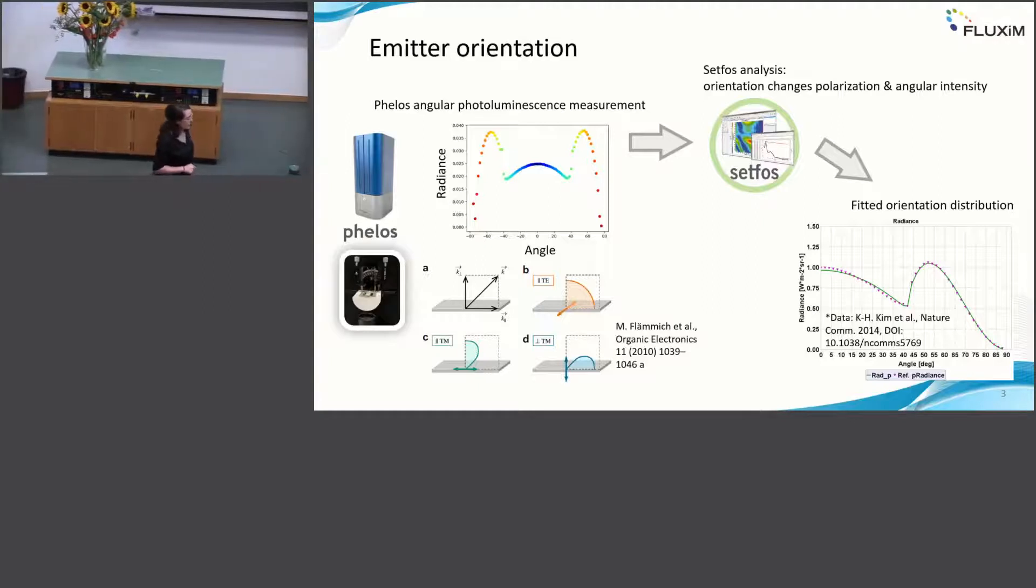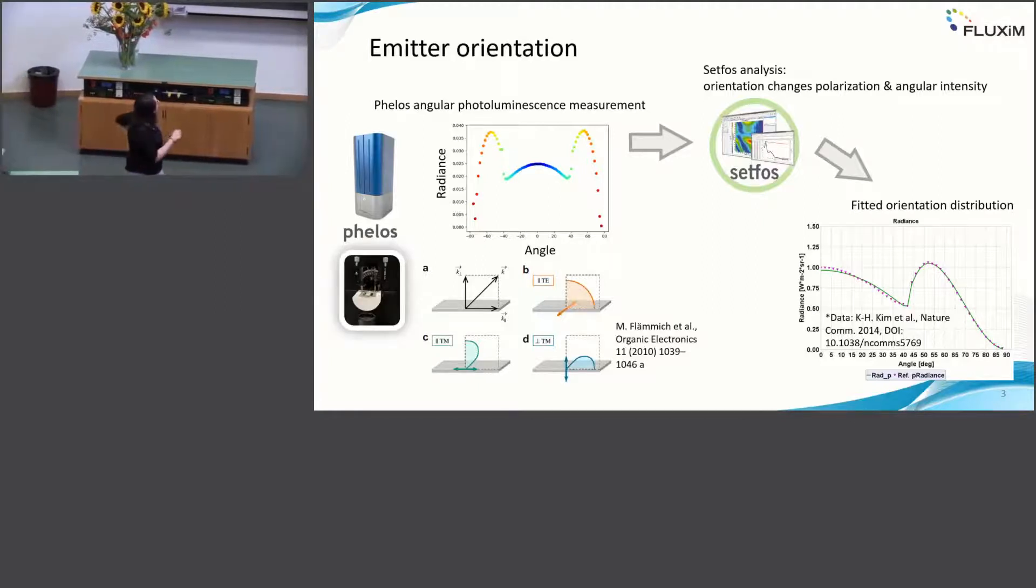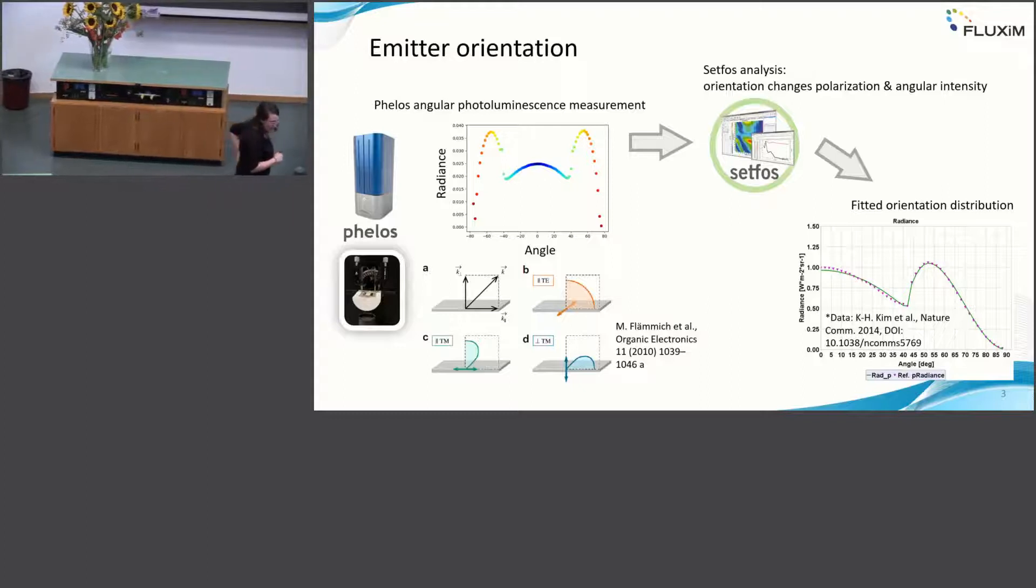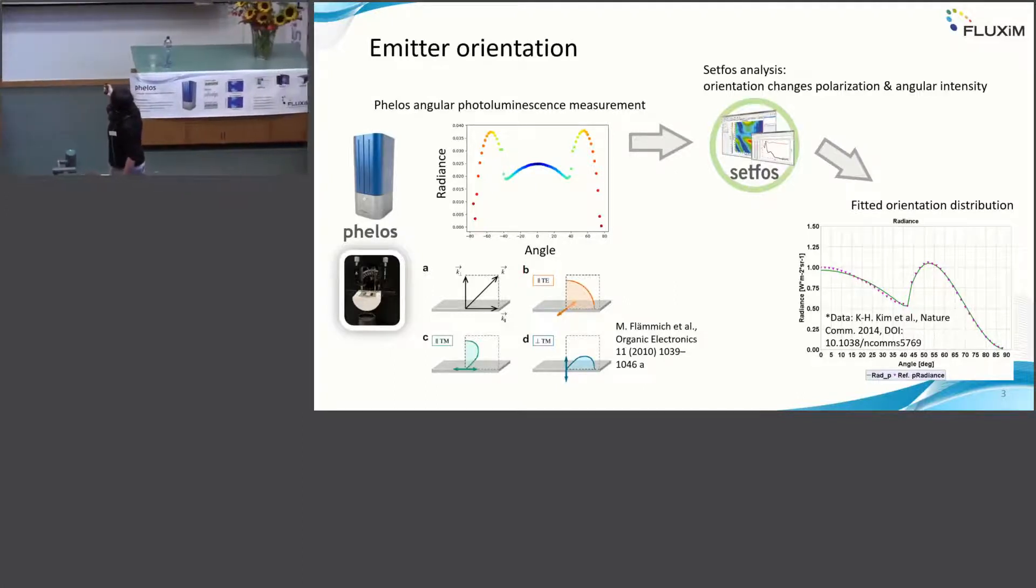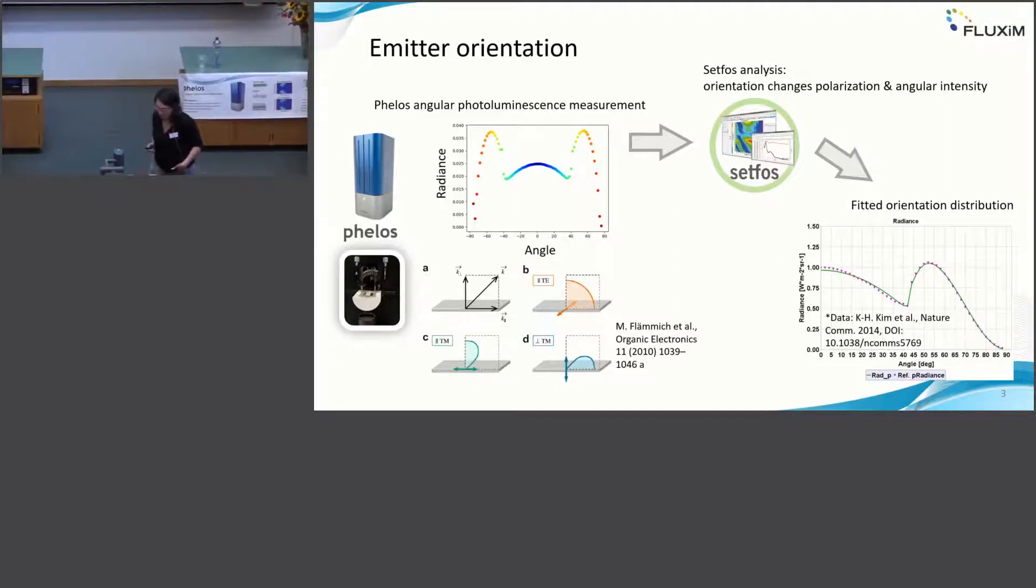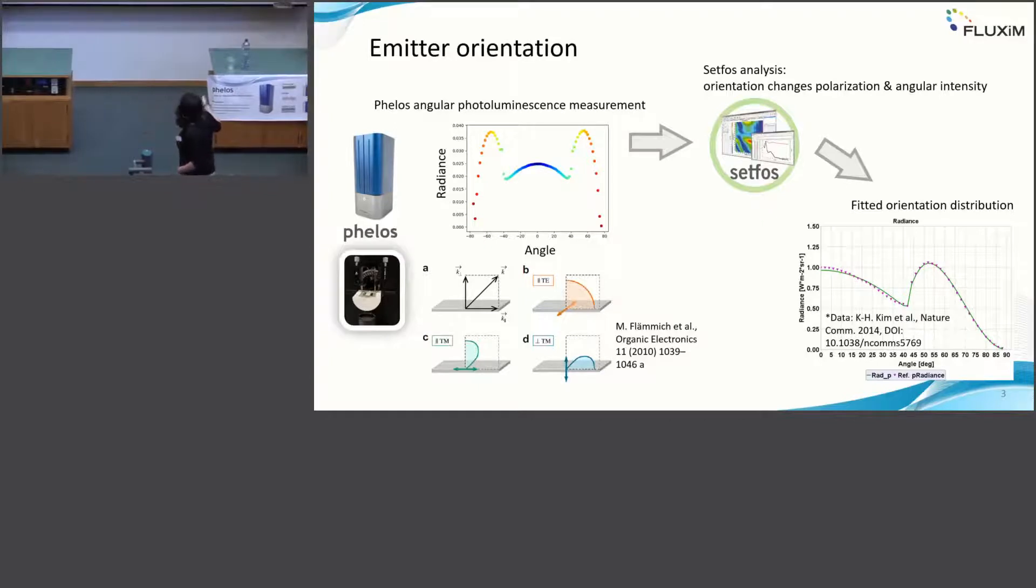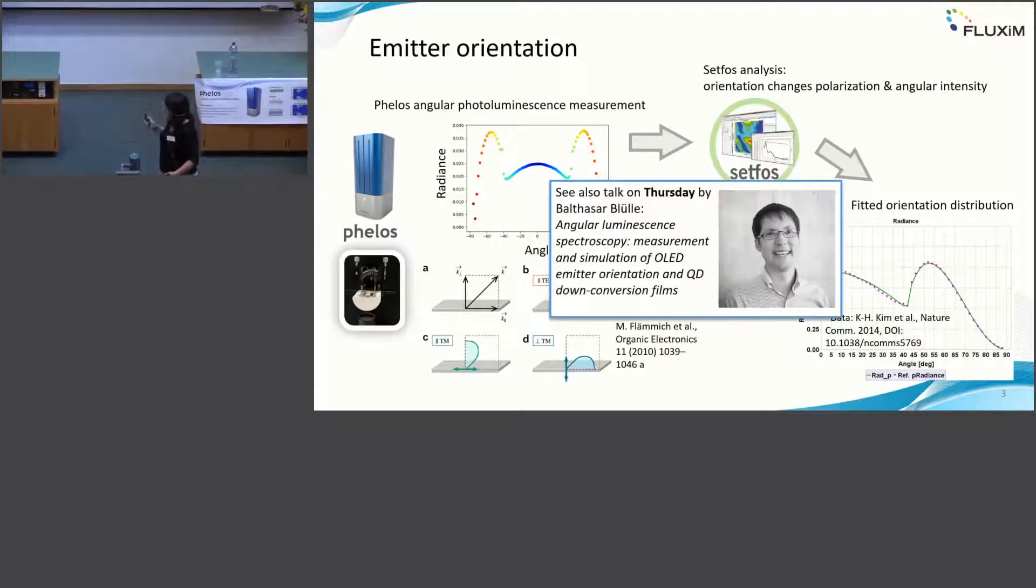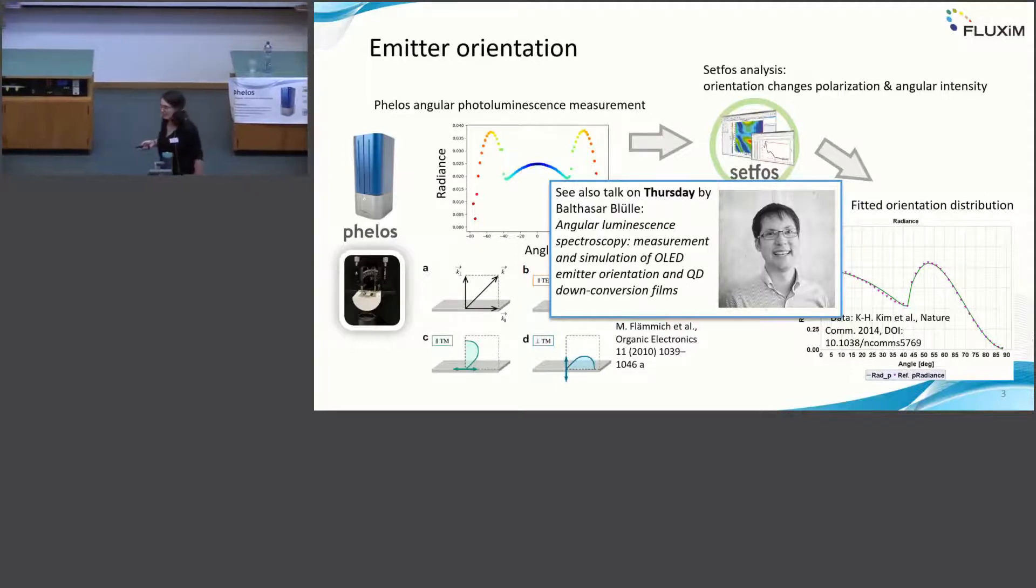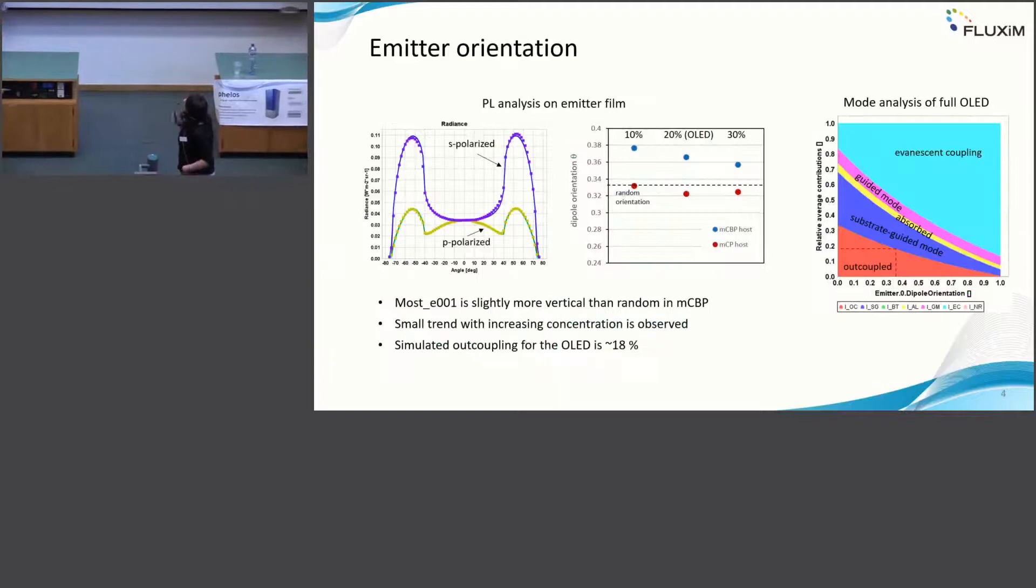Very briefly about the emitter orientation. We did fluorescence measurements with this new device, Phelos. When you simulate this angular dependent radiance with an electro-optical simulation tool like ZFOS, you can get out emitter orientation. So here you get a certain distribution of emitter orientation in horizontal and vertical orientation. I will not talk about the details because on Thursday, there will be a talk by my colleague, Valtzar, who will introduce the technique in more detail.